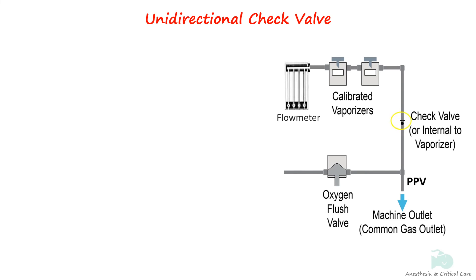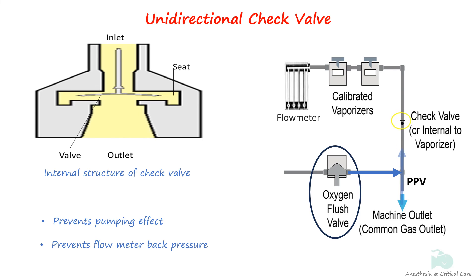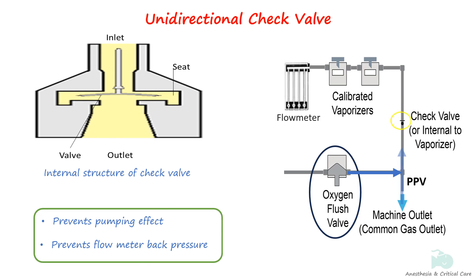A unidirectional check valve is present on some machines between the vaporizers and the common gas outlet, upstream of where the oxygen flush flow joins the fresh gas flow. Its functioning is the same as the hanger yoke check valve of the high-pressure system. Positive pressure ventilation and oxygen flush can cause backflow of gas to the vaporizers and flow meters, creating a pumping effect that could cause increased vaporizer output and inaccurate flow indicator readings. The purpose of the outlet check valve is to prevent reverse gas flow. Newer machines like Draeger incorporate a baffle system and specially designed manifold to prevent the pumping effect, making an outlet check valve unnecessary.